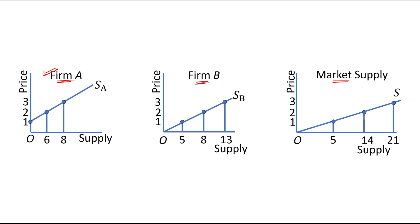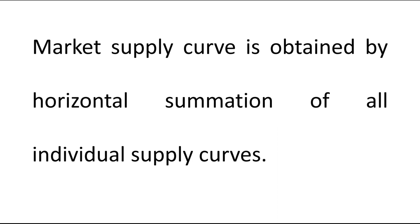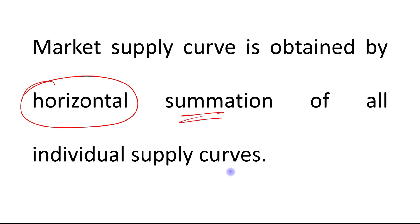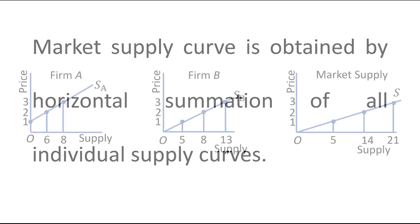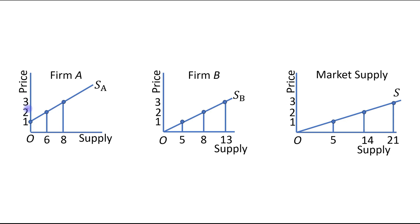The market supply curve is obtained by the horizontal summation of all the individual supply curves. This means that at a price of rupees 2, Firm A is producing 6 units and Firm B is producing 8 units, giving a total market supply of 14 units at that price.